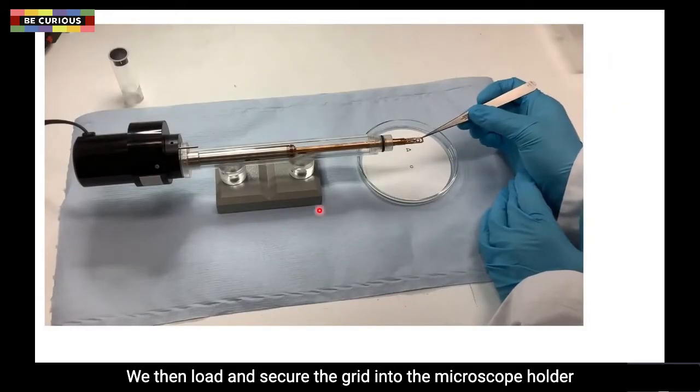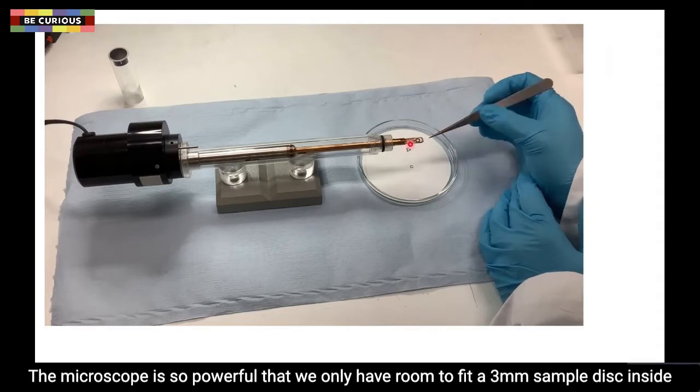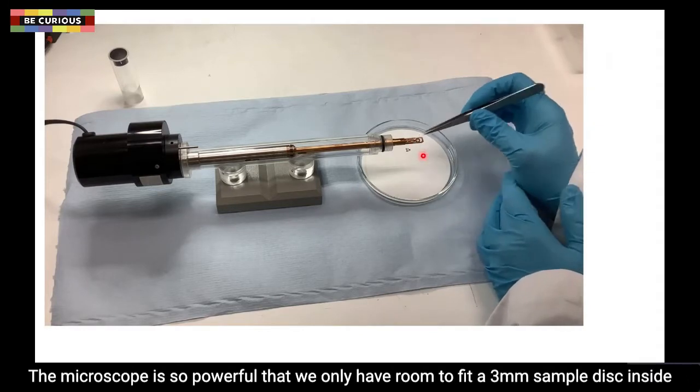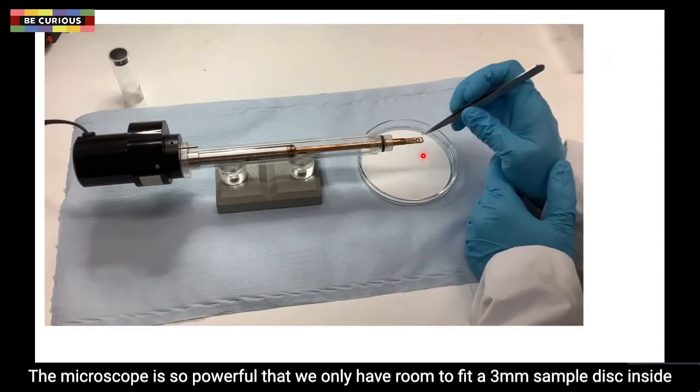We then load and secure the grid into the microscope holder. The microscope is so powerful that we only have room to fit a three millimetre sample disc inside.